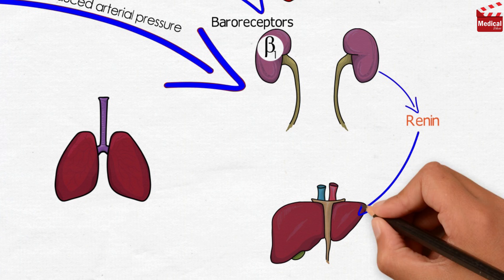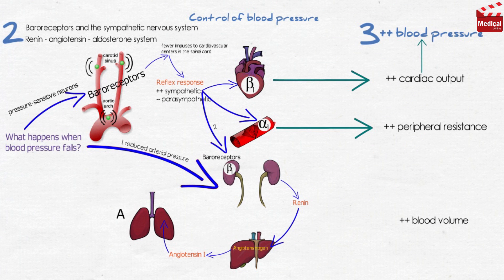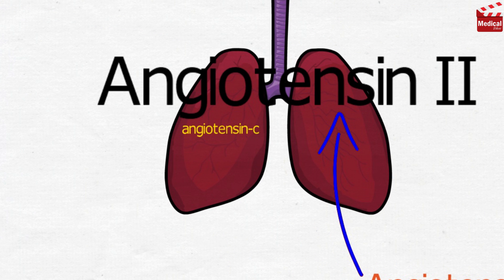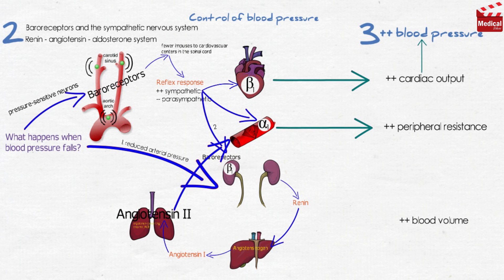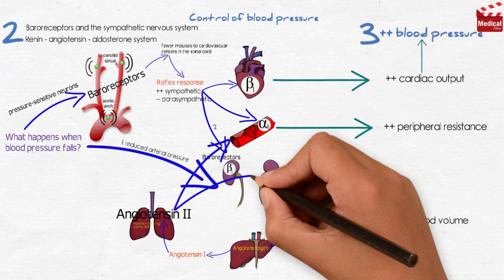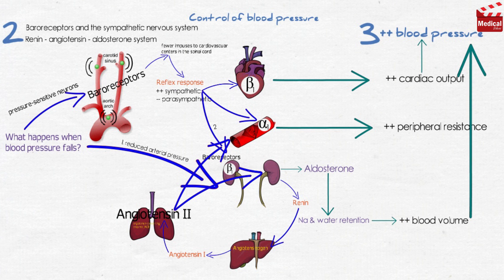Renin converts angiotensinogen, which is synthesized in the liver and secreted in plasma, to angiotensin 1, which is then converted to angiotensin 2 in the lungs in the presence of angiotensin-converting enzyme, or ACE. Angiotensin 2 is a potent circulating vasoconstrictor, constricting both arterioles and veins, increasing peripheral resistance and blood pressure. Angiotensin 2 also stimulates aldosterone secretion, leading to increased renal sodium reabsorption and increased blood volume, which further raises blood pressure. These effects of angiotensin 2 are mediated by stimulation of angiotensin 2 type 1, or AT1, receptors.